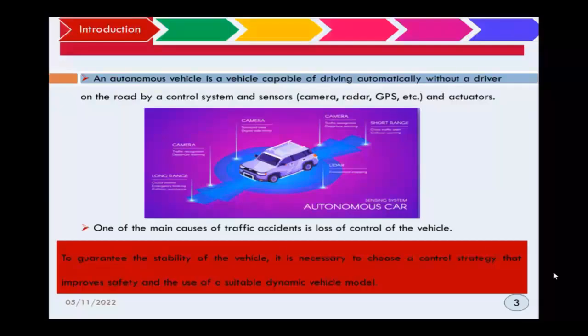Introduction. An autonomous vehicle is capable of driving automatically without a driver on the road by a control system and sensors, cameras, radar, GPS, and actuators. One of the main causes of traffic accidents is loss of control of the vehicle. And as humans are one of the main causes of road accidents, they are starting to develop autonomous vehicles. To guarantee the stability of the vehicle, it is necessary to use a control strategy that improves safety and a suitable dynamic vehicle model.